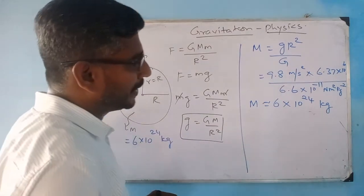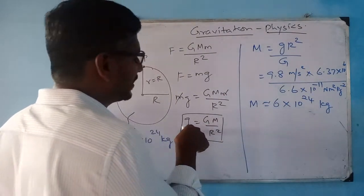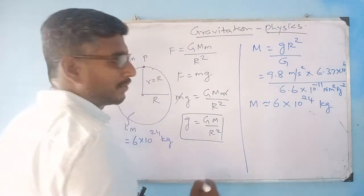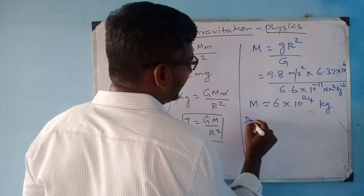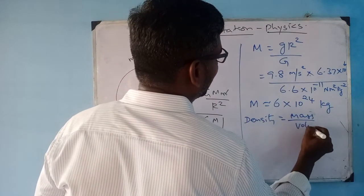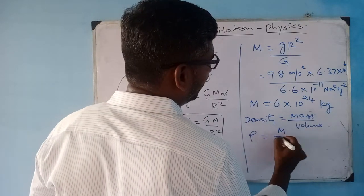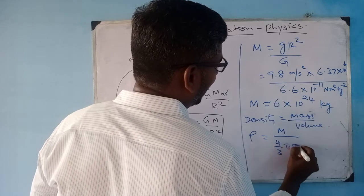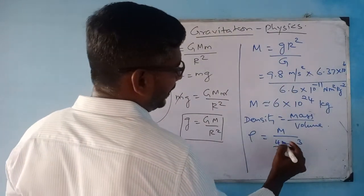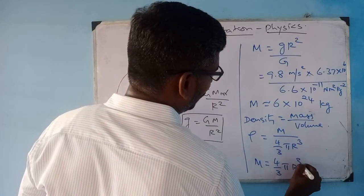Is it necessary to find out this mass? It is for your learning — you should understand that you can calculate the mass from this relation. Next, if you want to calculate the density: density is mass by volume. So density ρ equals mass M divided by volume (4/3)πR³, which gives mass M equal to (4/3)πR³ρ.